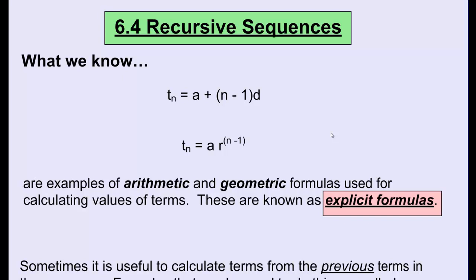These types of formulas we call explicit formulas, because they don't depend on other terms in the sequence to tell us what each term represents. All you need to know is the first number, the common difference, or the common ratio. What we're going to look at today are sequences that do depend on what the previous term or terms were in order to figure out the next term.